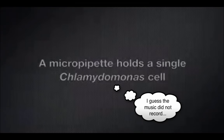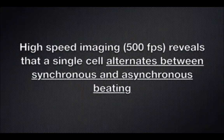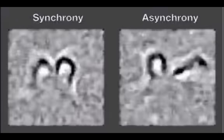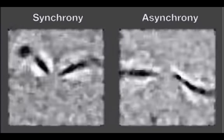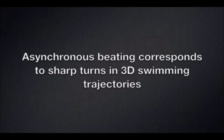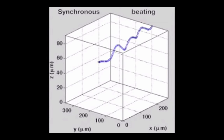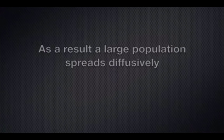We have a movie with music, and we're going to hold the Chlamydomonas by a pipette. You're going to see it changing between synchronous and asynchronous movement. On the left you have the synchronous movement, and on the right the asynchronous movement. The synchronous movement allows the organism to move in one direction, while the asynchronous movement makes a turn. Because of these two types of movement, Chlamydomonas can swarm and move effectively across the water column in search of light.